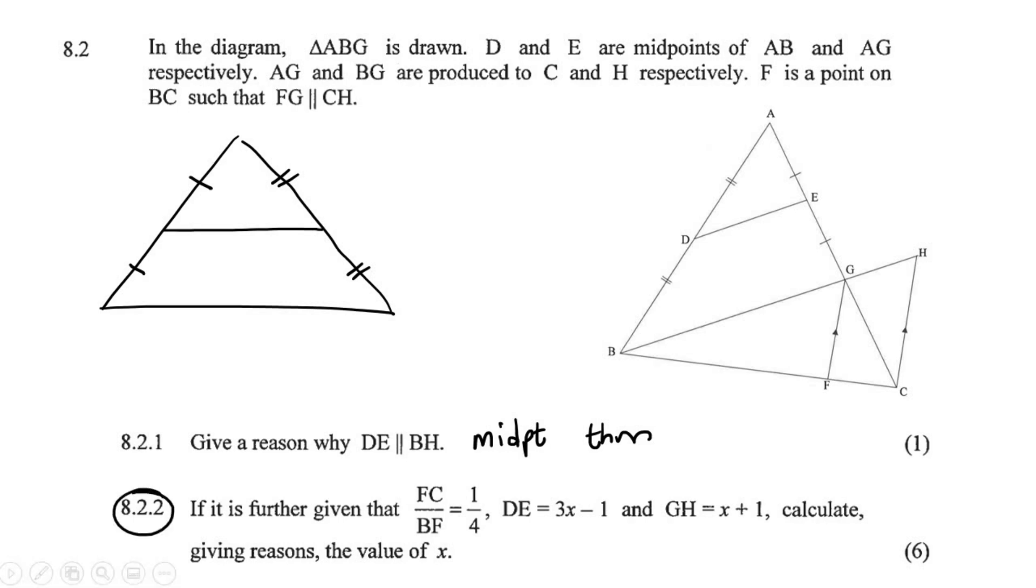This one for 6 marks, lovely. Oh, and another thing with the midpoint theorem, I'm not sure if we're going to have to use it, but remember that it also means that this is half of this length. So this length here is double the length of that one. I'm not sure if we'll need that.